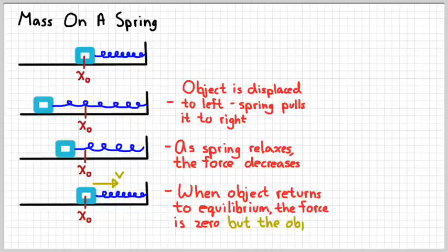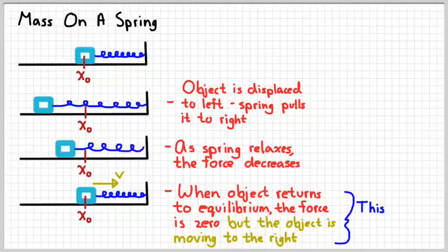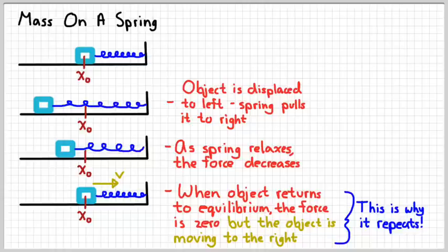However, this whole time that the spring's been pulling on this object, it's been causing it to speed up. And so in this picture, my object is moving to the right real fast. And so this is going to continue to go to the right until the spring stops it and pushes it back to the other direction, back to the left. This is why this motion is going to repeat itself over time.